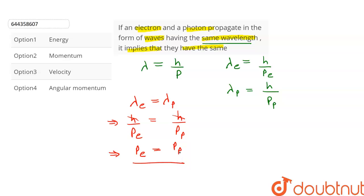So we can see that momentum of electron and photon is the same. So option number 2 will be the correct answer of this question.